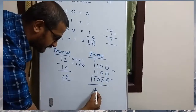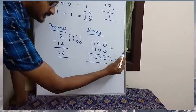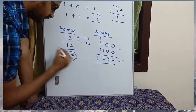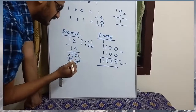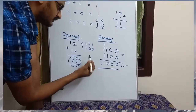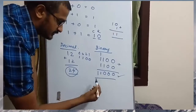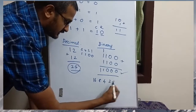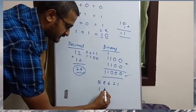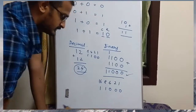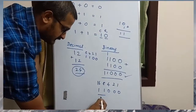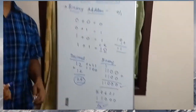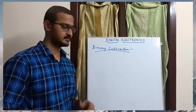If we verify the answer, we have a binary number. This binary number is 24 in decimal. Using place values 16, 8, 4, 2, 1 — 16 plus 8 equals 24. So the answer is correct. This is binary addition.